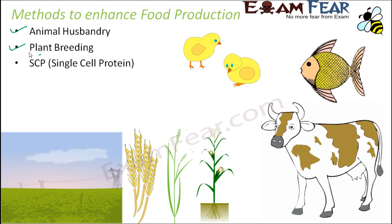Next is SCP, that is single cell protein. In single cell protein, we will see how a particular cell can be utilized as a food or as a rich source of protein. The best example here would be microbes — many microorganisms can be grown in culture and act as a source of food for human beings. The last method is tissue culture, where we will learn how an entire plant can be grown from a particular tissue or cell. Thousands of plants can be grown from a small cell or tissue of the original plant.